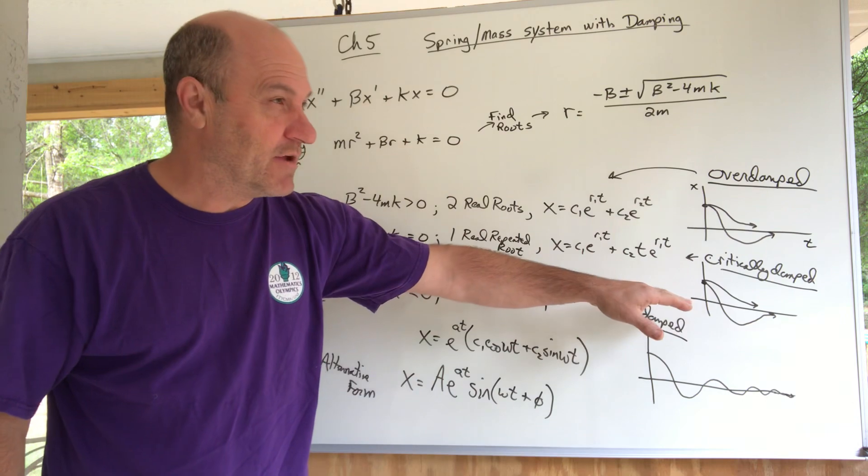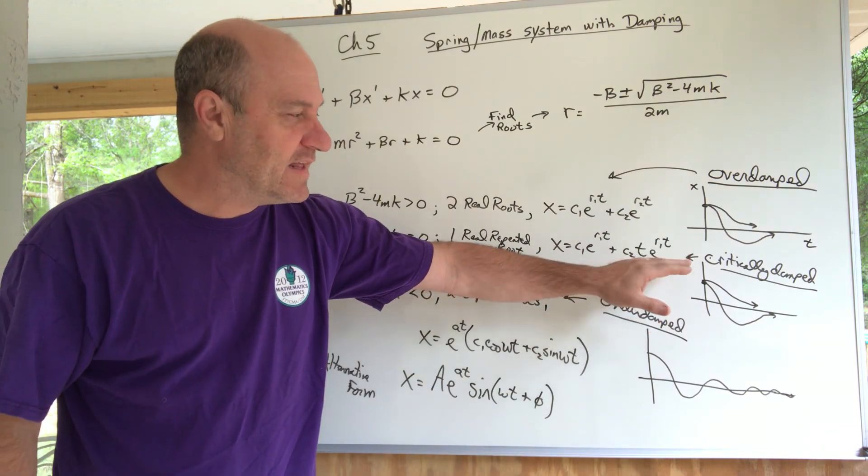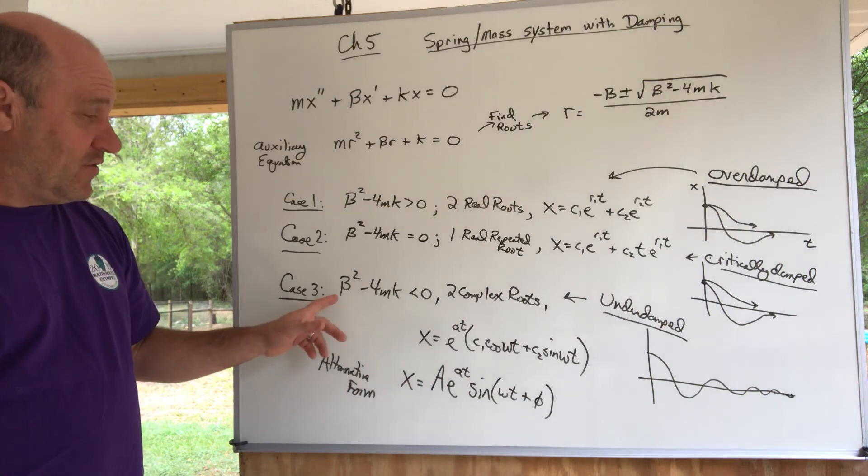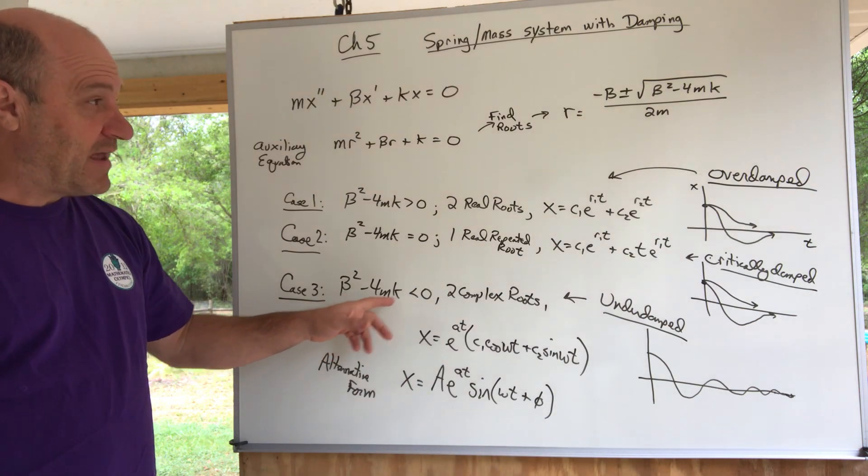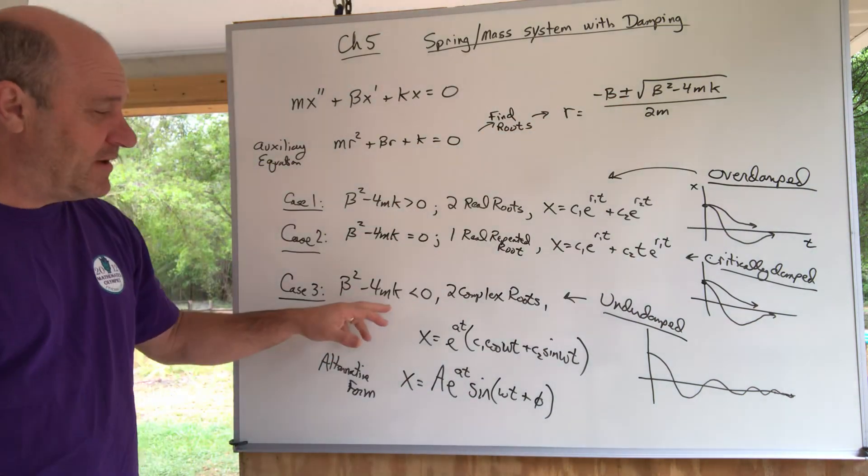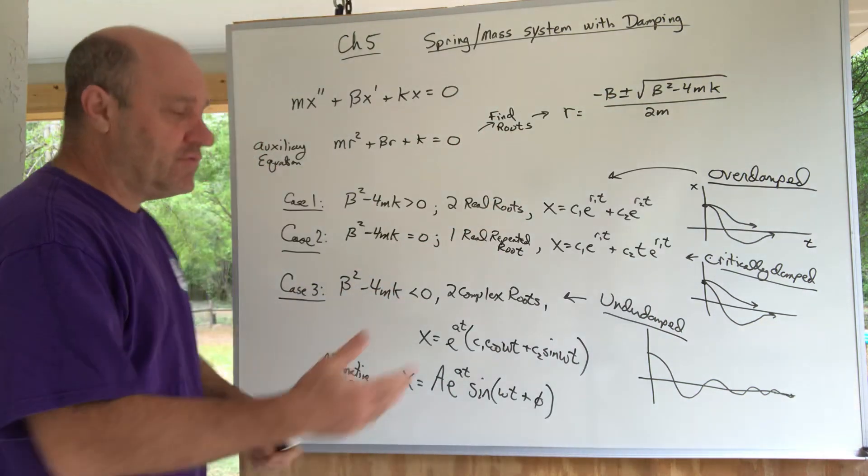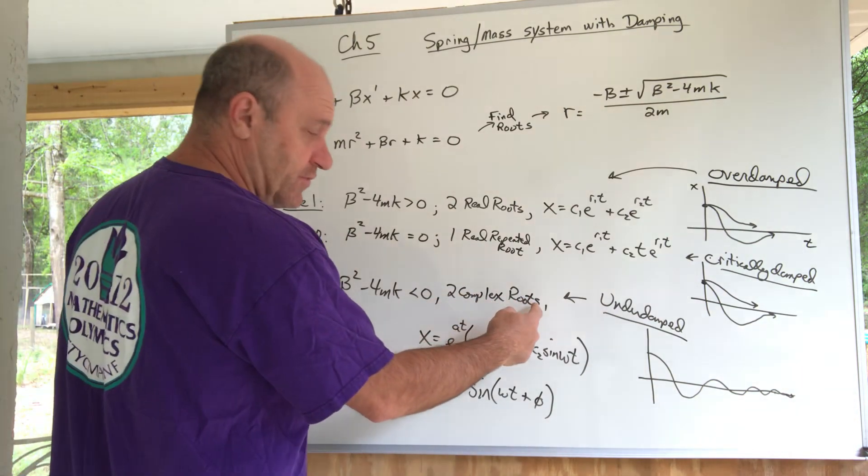Case three is, of course, beta squared minus 4mk, the discriminant of the quadratic formula, is less than zero. So then we have a negative in the square root that leads to two complex roots.